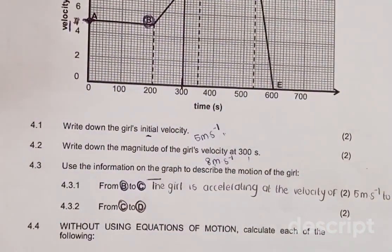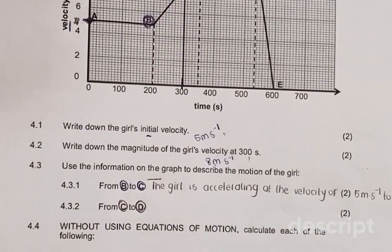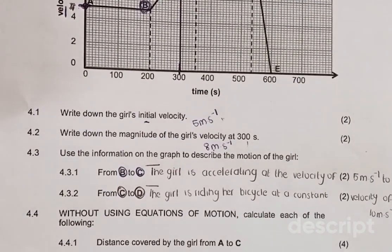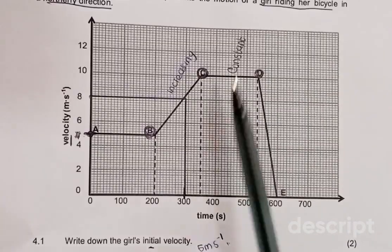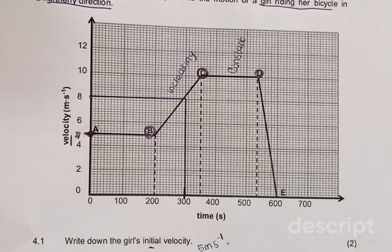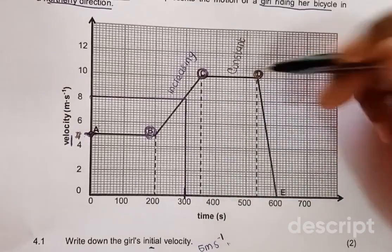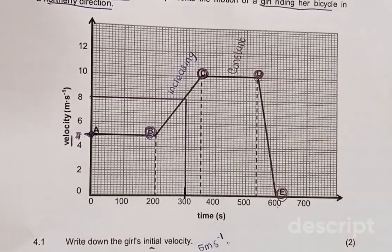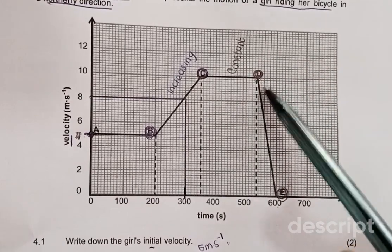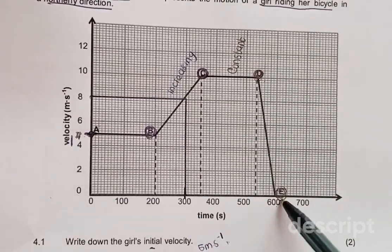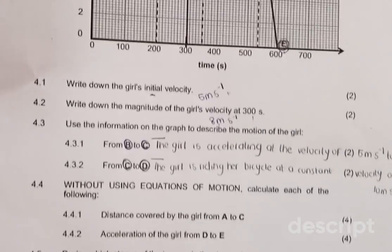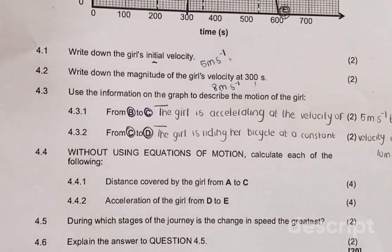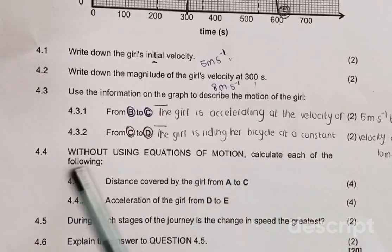This is how you put it in the test as well — you can pause the video and try it yourself. This is how I'll write it down: the girl is riding her bicycle at a constant velocity of 10 meters per second. If they say describe the motion from D to E, then you know that the girl is decelerating from a velocity of 10 meters per second to 0 meters per second.